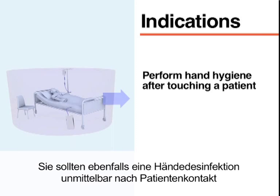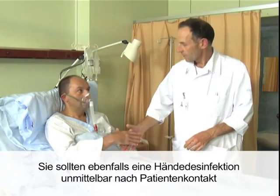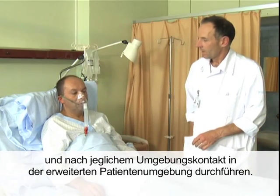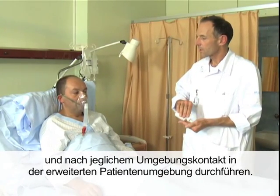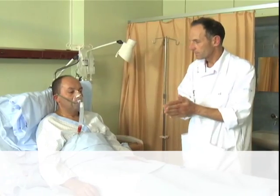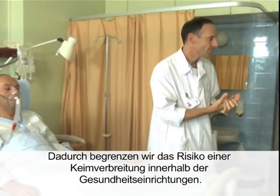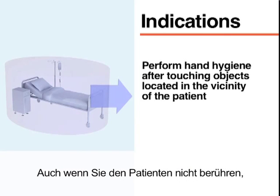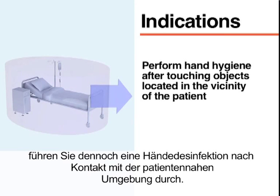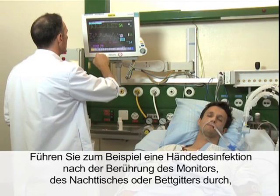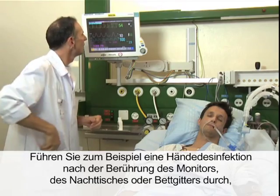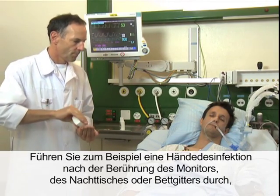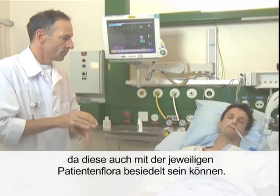You should also perform hand hygiene just after touching a patient and before touching any object located outside the patient zone. This will limit the risk of germ dissemination to the healthcare environment. Even if you did not touch the patient, perform hand hygiene after touching objects located in the vicinity of the patient — for example, after touching a monitor, bedside table, or bed rail — since these may also be contaminated by the patient's microbial flora.